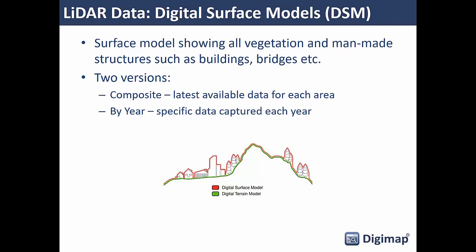The second type of data is the Digital Surface Model (DSM). This is what you would see if you looked out of an airplane — the surface you'd see from the air. In the infographic, that's the red line, which goes over the top of buildings, trees, forests, and hills. You can use these two surfaces together to work out volumes and heights of things — the top of a building combined with the terrain height underneath lets you calculate how tall buildings are. The DSM is also available in composite and by-year versions.